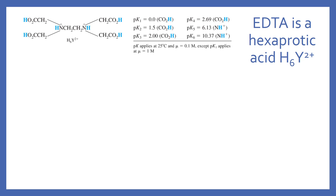It's important when we discuss EDTA titrations to understand that EDTA is a hexaprotic acid. That means it has six protons that it can give up, drawn here in blue. Being hexaprotic, it also has six different pKa values, listed pK1 through pK6.